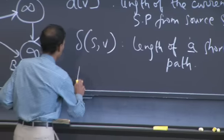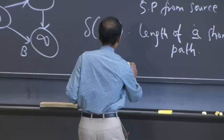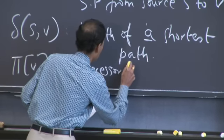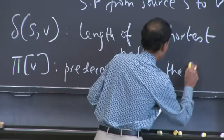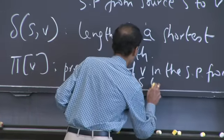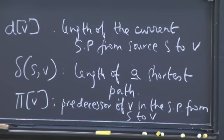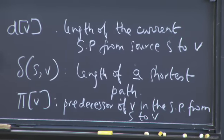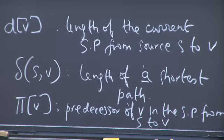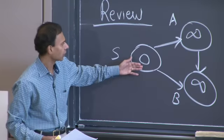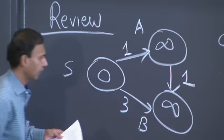One last important thing to reconstruct the path is the notion of a predecessor. Pi of V is the predecessor of V in the shortest path from S to V. You can follow this predecessor chain to reconstruct the shortest path. In this trivial example, you start with D of S being 0, and D of A and D of B being infinity.